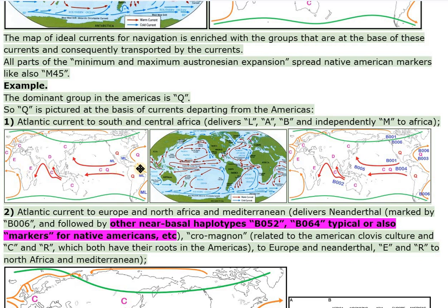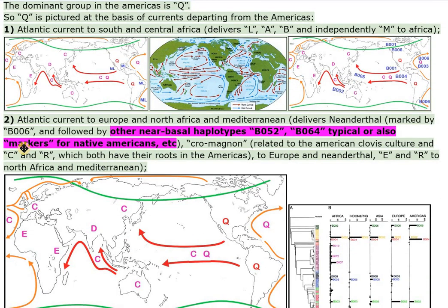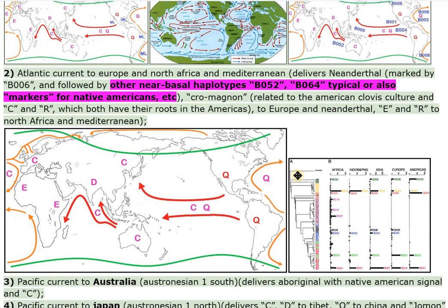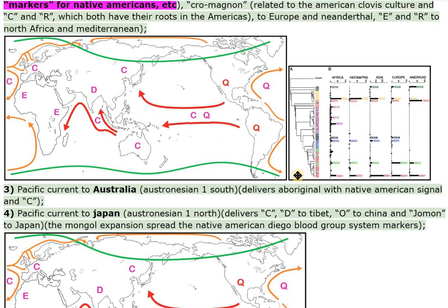Route 2: the Atlantic Current to Europe, North Africa, and the Mediterranean delivers Neanderthal markers, marked by B006, followed by other near-basal haplotypes B052 and B064 — typical markers for Native Americans. Also included is Cro-Magnon, related to the American Clovis culture, and haplogroups C and R, which both have their roots in the Americas, to Europe and Neanderthal. Haplogroups E and R go to North Africa and the Mediterranean.